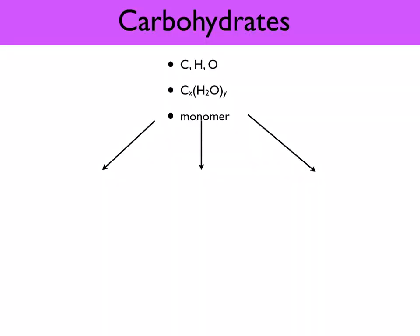Carbohydrates are made up of carbon, hydrogen and oxygen. Their general formula is CXH2OY. They are made up of individual units called monomers. The basic unit is a sugar or saccharide. If there's only one sugar, we call it a monosaccharide — a very simple sugar. If you have two monomers joining together, it forms a disaccharide. Multiple monomers joining together forms polysaccharides.